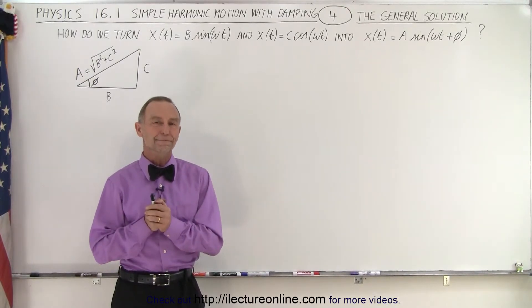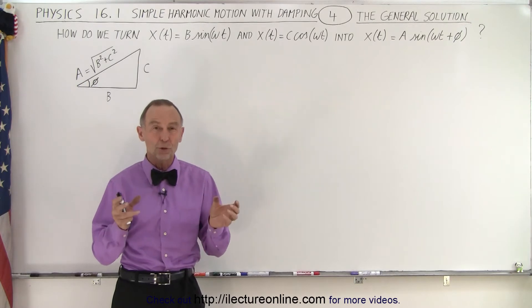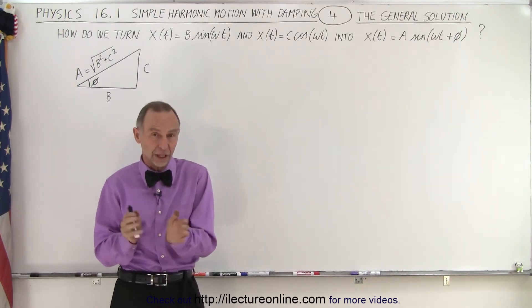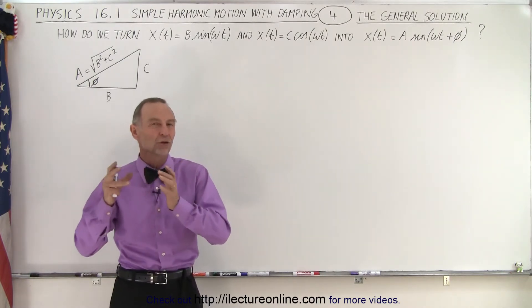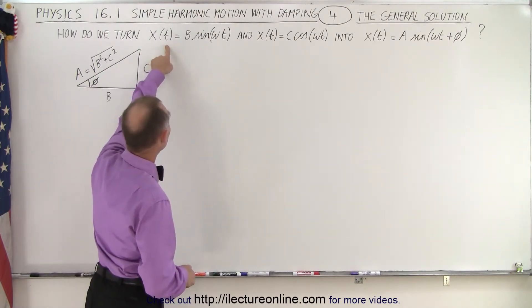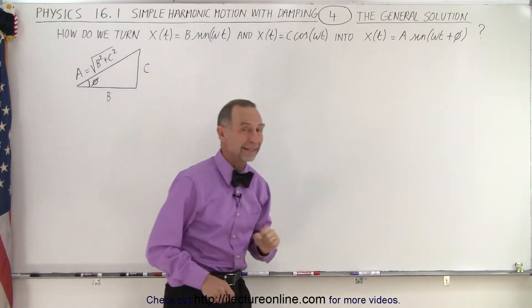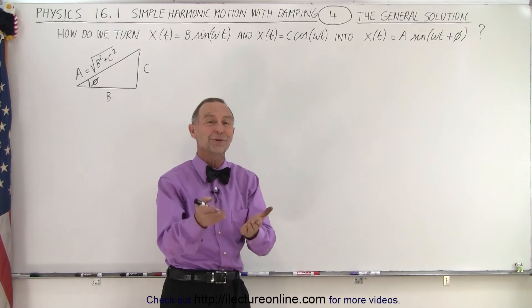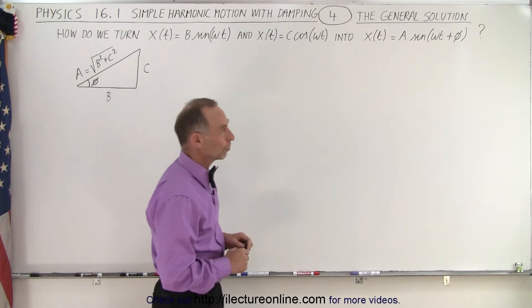Welcome to iLectureOnline. In this video we're going to show you how we can take the two solutions for the ordinary second-order differential equation that describes oscillatory motion, and how that can be turned into a single general solution. In other words, we're going to show you that x equals b sine of omega t and x equals c cosine of omega t — both solutions to the differential equation for simple harmonic motion — can be turned into a single combined solution.